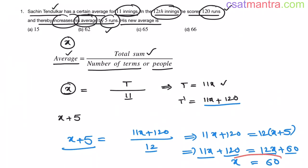Now x equals 60 is the old average my friends, average for 11 innings. But we want new average. New average is x plus 5, that is 60 plus 5. This equals 65. So our answer is C.